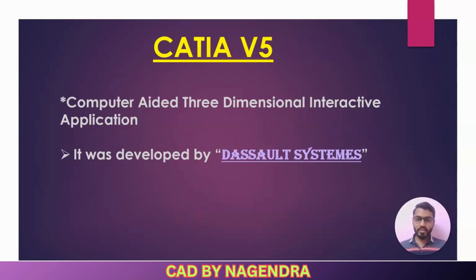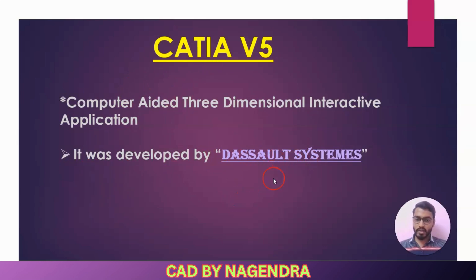Let's see the introduction for CATIA. We are using CATIA v5. Usually in CATIA we have v1, v2, v3, v4, v5, and the latest v6 is also available now, but maximum industries use v5. CATIA stands for Computer Aided Three-dimensional Interactive Application. CATIA was developed by Dassault Systèmes, the company which invented CATIA.